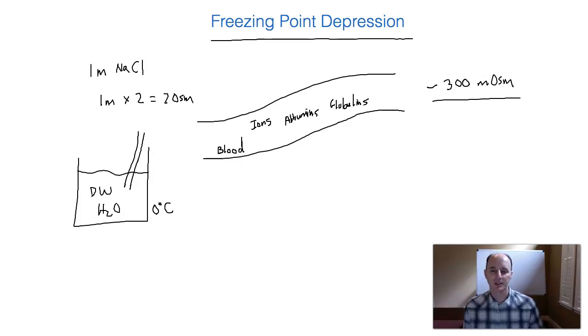And it turns out for every one mole of solute within a liter of water, you can depress the freezing point by minus 1.86 degrees Celsius. So for every mole of solute, you can depress the freezing point by negative 1.86 degrees Celsius.